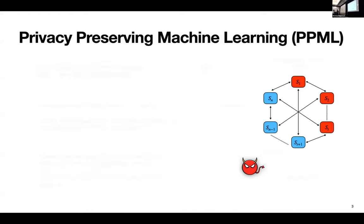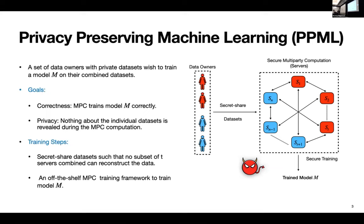So how does MPC fit into the paradigm of privacy preserving machine learning? So here you have a set of data owners with their private data sets, and they want to train a machine learning model on their combined data sets. So in this case, the goals are as follows. First is correctness, that the MPC indeed trains this model correctly. And second is privacy, that nothing about the individual data sets is revealed during the training procedure inside the MPC.